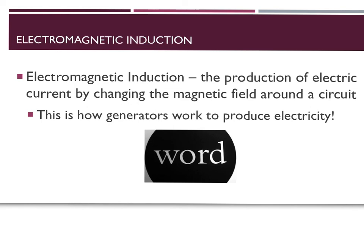Using a magnet on a coil of wire to make electricity is called electromagnetic induction, and this is basically how generators work. To make AC current, you take a magnet and spin it in a coil of wire. This is done in many ways — hydroelectric dams, nuclear power plants, and gasoline or natural gas engines — all producing electricity in the same manner: by spinning a magnet in a coil of wire.